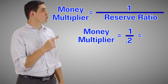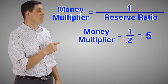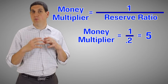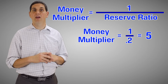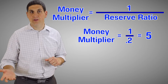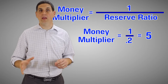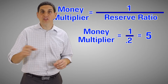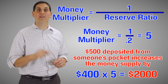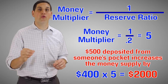The money multiplier is 1 over 0.2, so the multiplier is 5. That bank is going to hold $100 in required reserves, and the excess reserves of $400 they're going to loan out. That $400 is all new money, and all the other steps also create new money. So it's $400 times 5, which is $2,000.